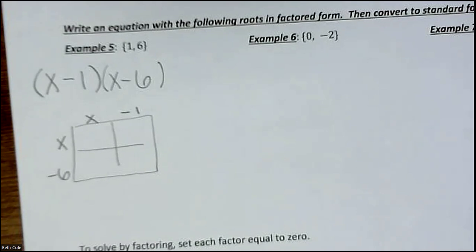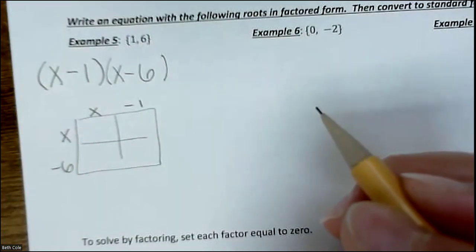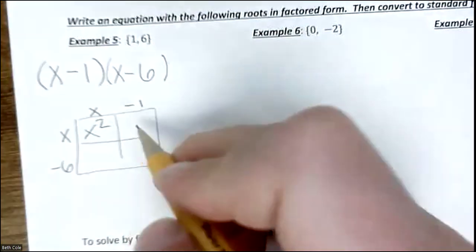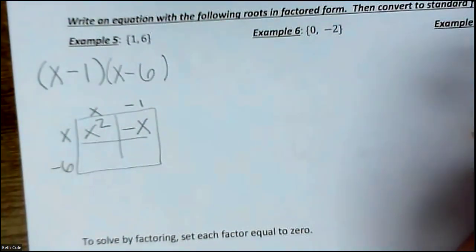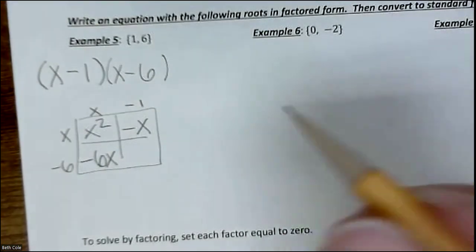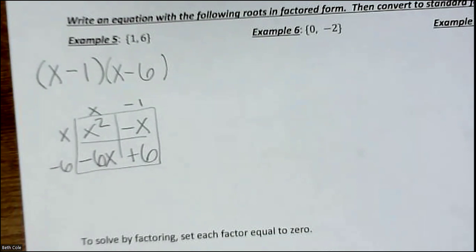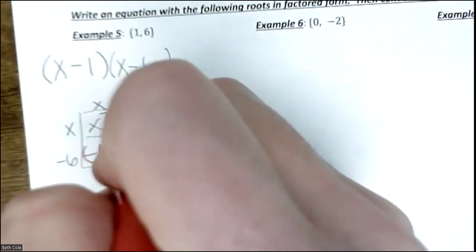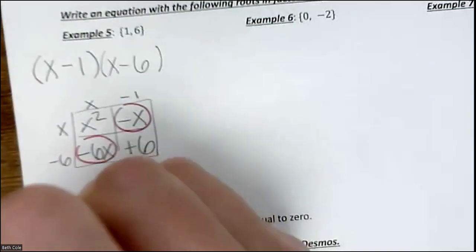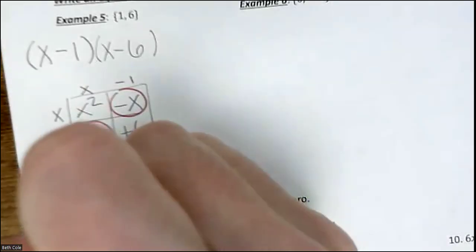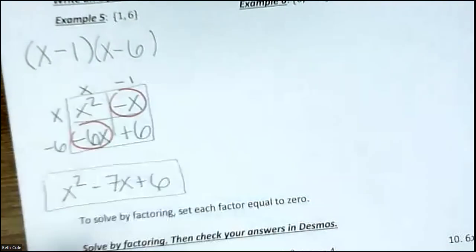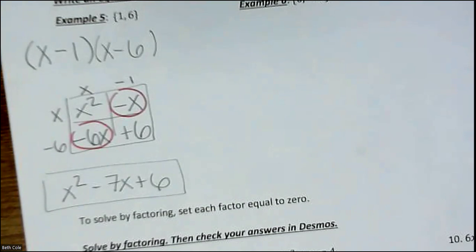You're going to put x minus 1 along one side and x minus 6 along the other side and multiply them together. In the first window you get x squared, then minus 1x, then minus 6x. Negative 1 times negative 6 is positive 6 because the negatives cancel. The diagonal ones combine, so your answer is x squared minus 7x plus 6. You've done this before — you just have to set it up yourself.